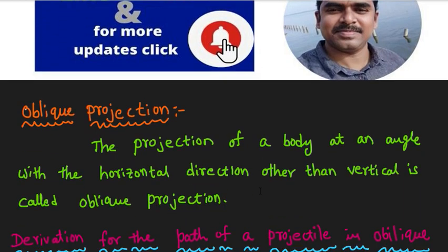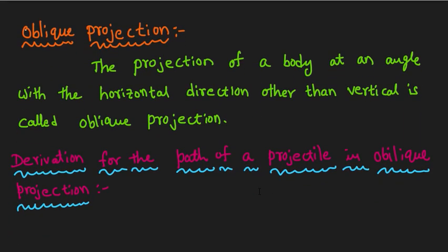I am going to talk about Oblique Projection. Oblique Projection is defined as: the projection of a body at an angle with the horizontal direction, other than vertical, is called Oblique Projection.